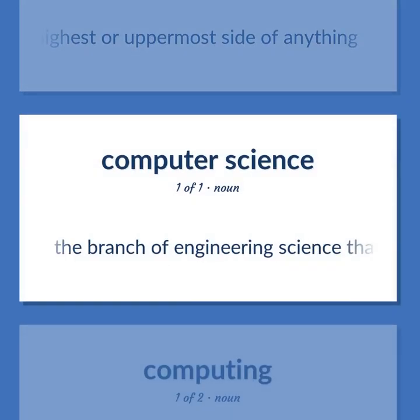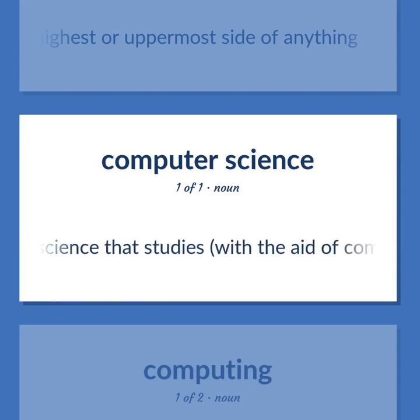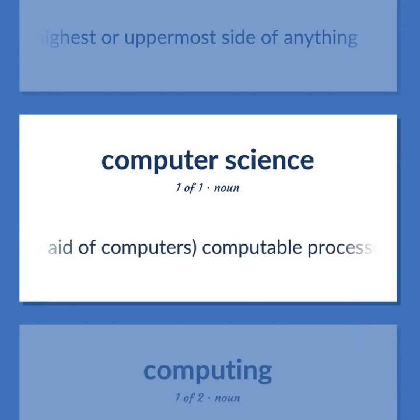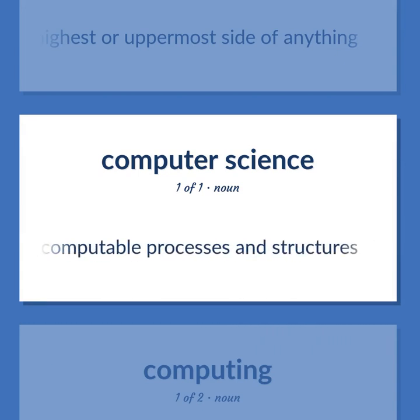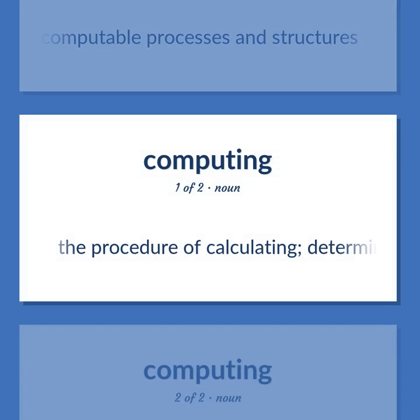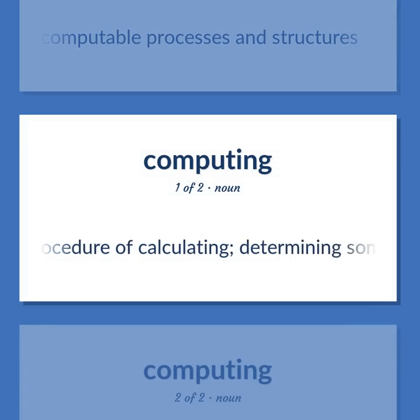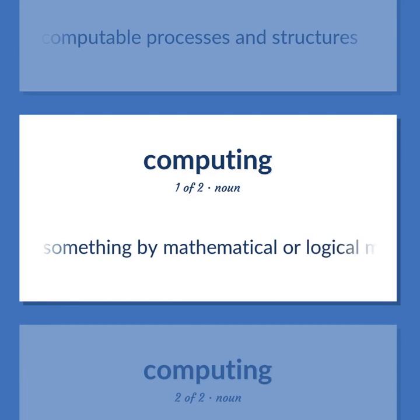Computer Science: the branch of engineering science that studies, with the aid of computers, computable processes and structures. Also: computation — the procedure of calculating; determining something by mathematical or logical methods.